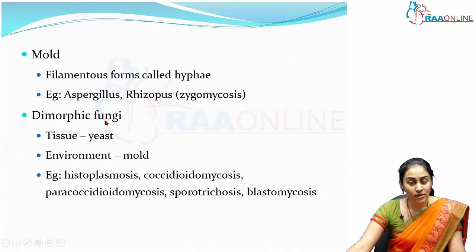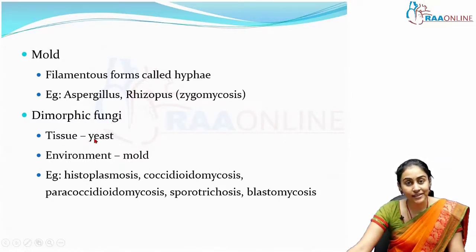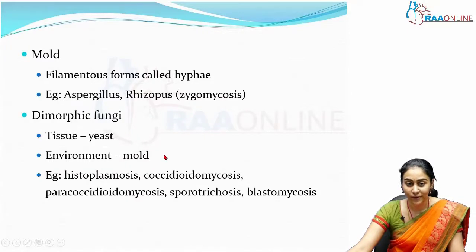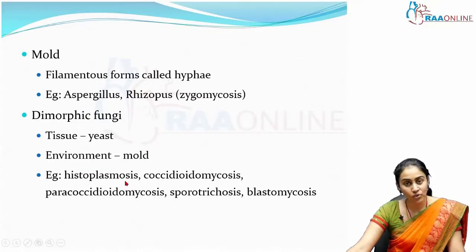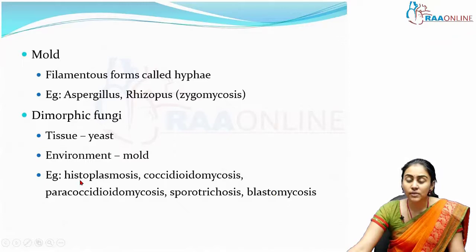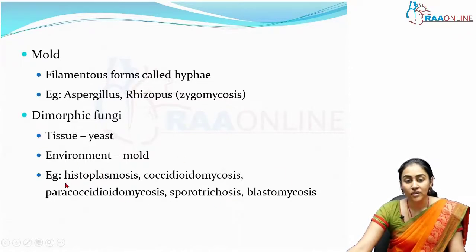Finally, we have the dimorphic fungi. These exist in the yeast form inside tissues and in the mold form with hyphae in the environment. Examples of dimorphic fungi include histoplasmosis, coccidioidomycosis, paracoccidioidomycosis, sporotrichosis, and blastomycosis. Essentially, most of the endemic mycosis we discussed earlier fall under the dimorphic fungi category, while molds and yeasts are more commonly implicated in opportunistic infections.